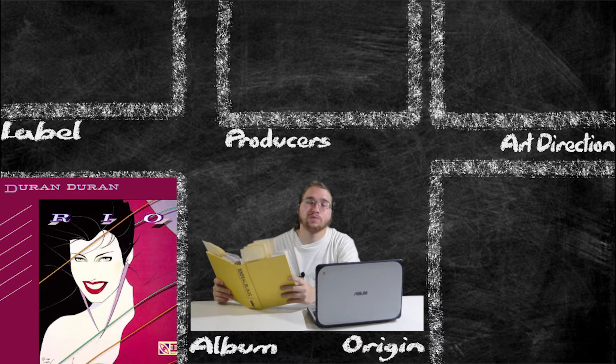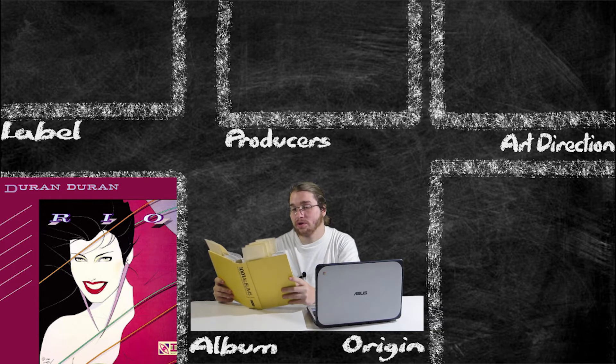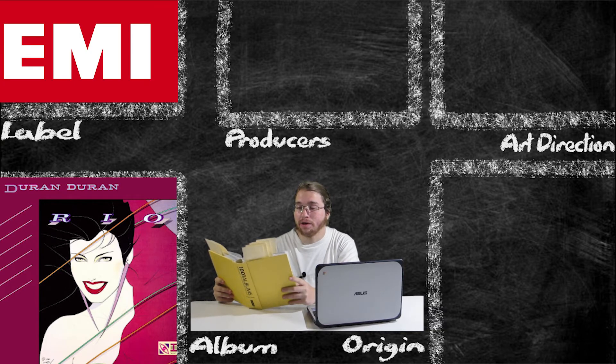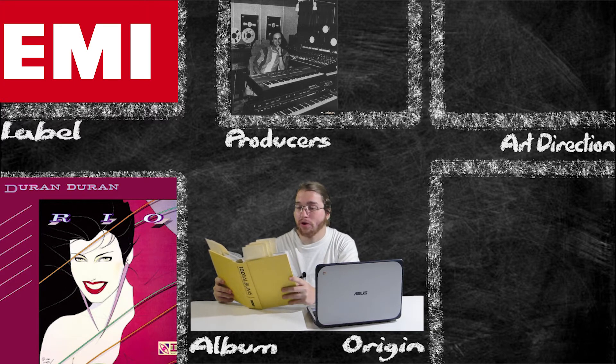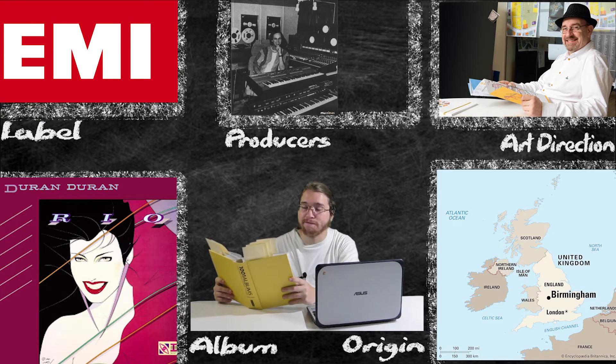According to the book of 1001 Albums to Listen to Before You Die, Rio, released by Duran Duran in 1982, was produced under the EMI label under Colin Thurston, with art direction by Malcolm Garrett, Nationality UK, in a running time of 42 minutes and 19 seconds.